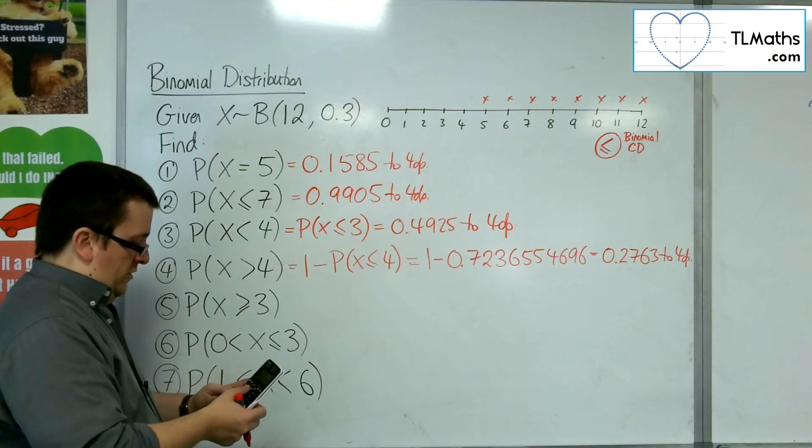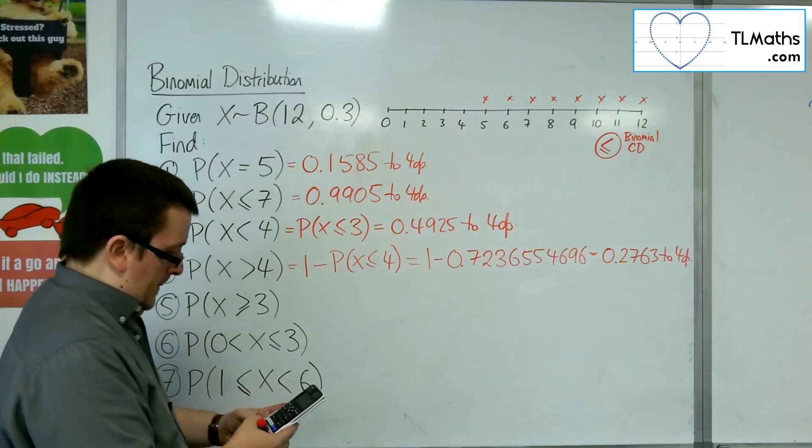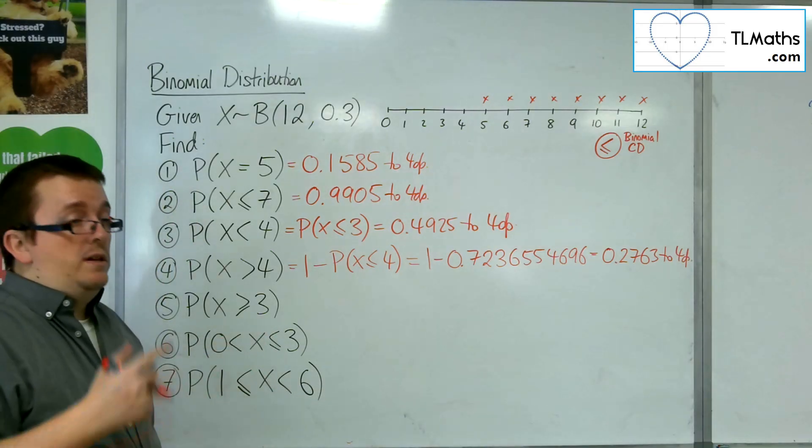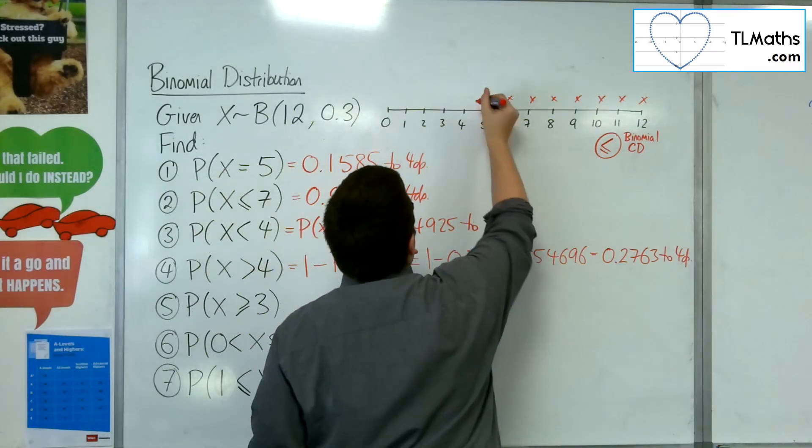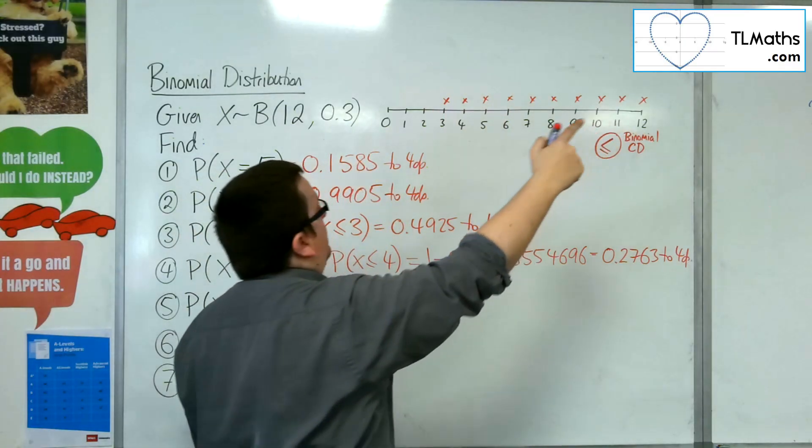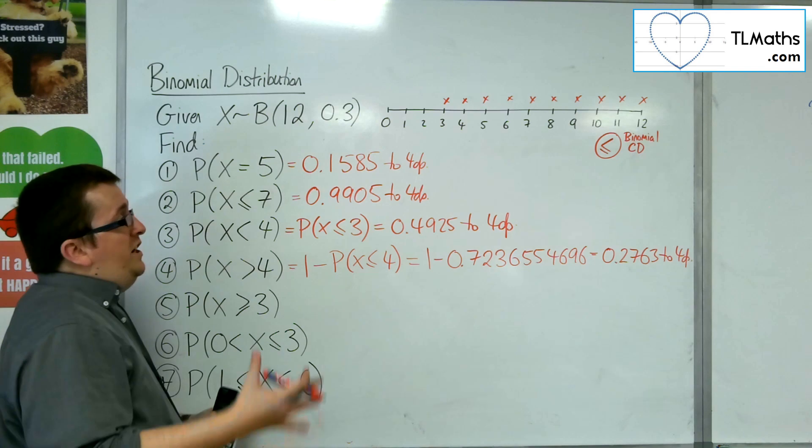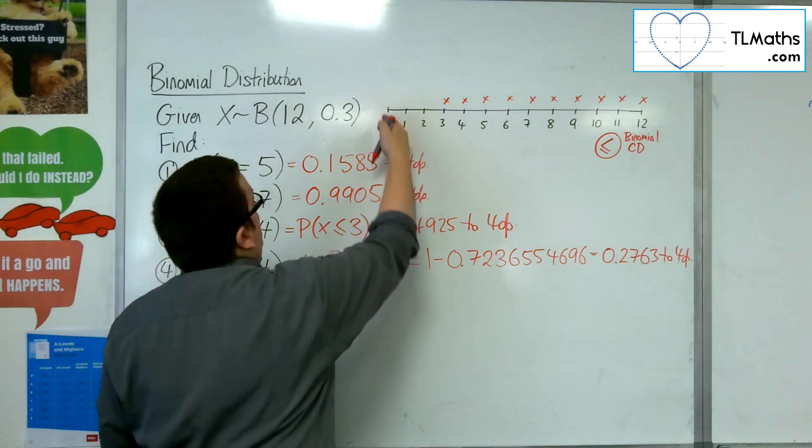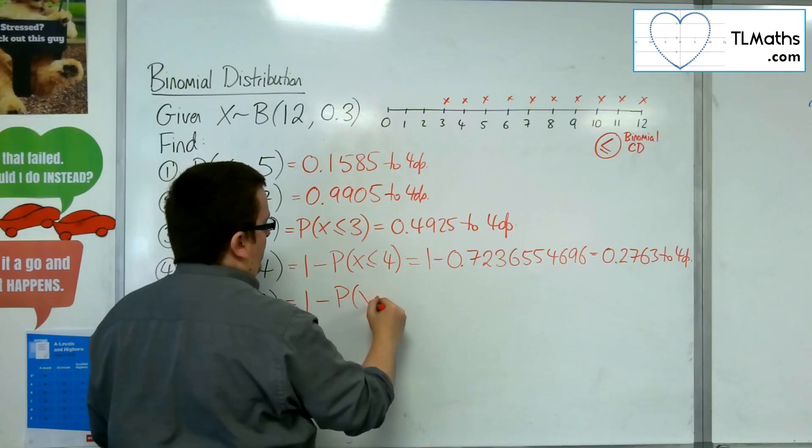All right, go back into distribution, so I'm ready. So, x is greater than or equal to 3. Greater than or equal to 3 would mean all of those, from 3 up to 12. So, I can use a similar technique. I can do 1, take away the probability of the bit I don't want, which is less than or equal to 2.